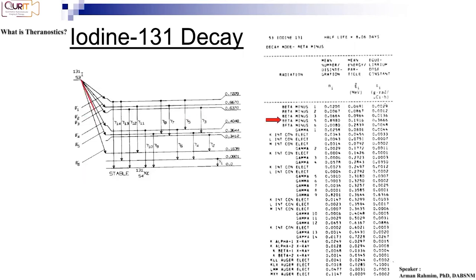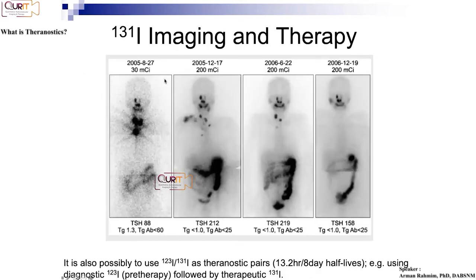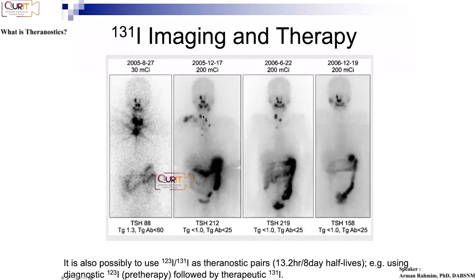Here's an example of iodine-131. There's a beta emitted for treatment, and also a gamma emitted at around 364 keV for imaging. So you can end up with images like this — you can think of this as a pre-treatment scan. Nowadays people tend to use iodine-123 for imaging only, but when the patient has been injected with a treatment dose, you see the images are less noisy because more is injected. The beauty is you're treating this patient right now while also imaging them.